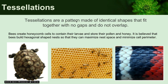Lastly, we have tessellations. Tessellations are patterns made of identical shapes that fit together with no gaps and do not overlap. The prime example is honeycomb made by bees. It is believed that bees create hexagonal honeycomb because it maximizes their nest space and minimizes the cell perimeter. If you look into the geometry of a single cell, there's actually an angle toward the back where they build the cell down so they can store a maximum amount of pollen and honey. Tessellations are also seen on the back of a tortoise shell and in snake scales, which show a similar hexagonal pattern.